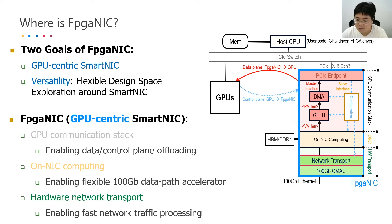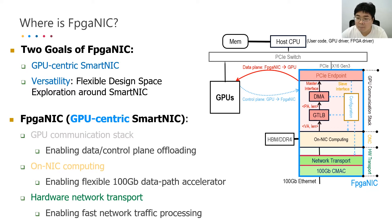Now let's see the location of FBGNIC in our system. FBGNIC acts as a PCIe endpoint, such that it can directly communicate with GPU without CPU being involved.